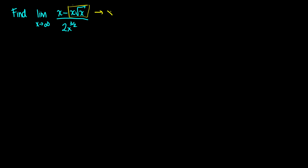This is the same thing as x to the 1 times x to the 1 half. If we want to get a common denominator, this would be x to the 2 over 2, which is the same as x to the 1 multiplied by x to the 1 half. When we multiply powers we add the exponents, so this is the same thing as x to the 3 halves. So let's rewrite this as the limit as x approaches infinity of x minus x to the 3 halves over 2x to the 3 halves.